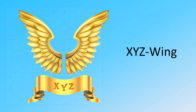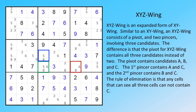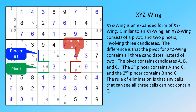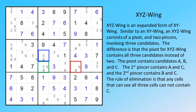X-Y-Z Wing is an expanded form of X-Y Wing. Similar to an X-Y wing, an X-Y-Z wing consists of a pivot and two pincers involving three candidates. The difference is that the pivot for X-Y-Z wing contains all three candidates instead of two. The pivot contains candidates A, B, and C. The first pincer contains A and C, and the second pincer contains B and C. The rule of elimination is that any cells that can see all three cells cannot contain C.